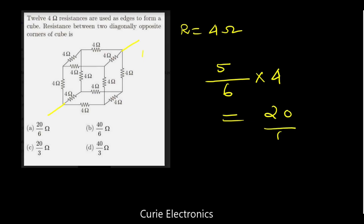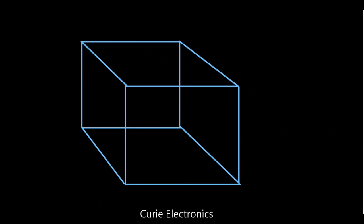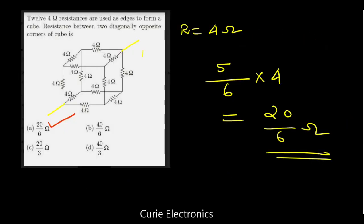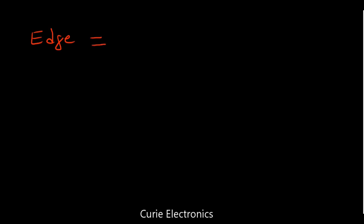Let's solve the given problem in less than 5 seconds. The question: 12 four-ohm resistors are used as edges to form a cube — find the resistance between two diagonally opposite corners. That is the body diagonal: 5 upon 6 multiplied by r, where r equals 4 ohms, giving 20 upon 6 ohms as the answer. That took just 2 seconds. For the edge case with r = 4 ohms: 7 upon 12 multiplied by 4 gives 7 upon 3 ohms.